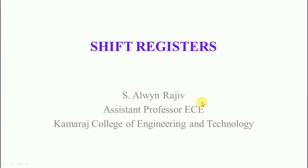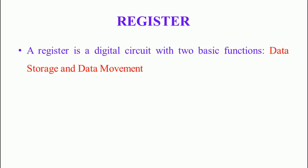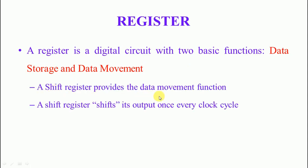In this lecture, we are going to discuss about the register. A register is a group of flip-flops. A flip-flop can store one bit of information, and an n-bit register has a group of n flip-flops capable of storing binary information. A register is a digital circuit with two basic functions: data storage and data movement. In this lecture we are focused only on the shift register, which provides the data movement function.